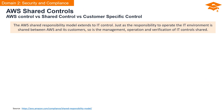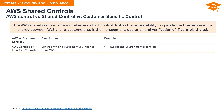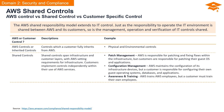The AWS Shared Responsibility Model extends to IT controls. Just as the responsibility to operate the IT environment is shared between AWS and its customers, so is the management, operation, and verification of IT controls. First, we have AWS controls or inherited controls — these are controls fully inherited by customers from AWS. Think of things like physical and environmental controls; AWS has got that covered. Then there are shared controls, which stretch across both infrastructure and customer layers. AWS sets the requirements for infrastructure, and customers independently implement controls within their use of AWS services.